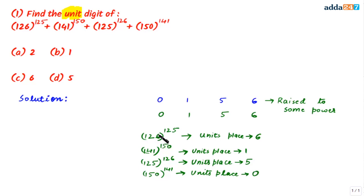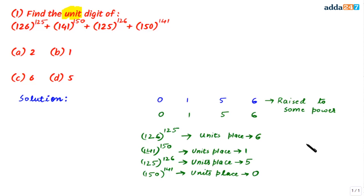So the units digits for these four expressions are 6, 1, 5, and 0. Adding them up: 6 + 1 = 7, 7 + 5 = 12, 12 + 0 = 12. The sum of digits at units place is 12, so the digit at the units place in the final result is 2. Option A is the correct answer.